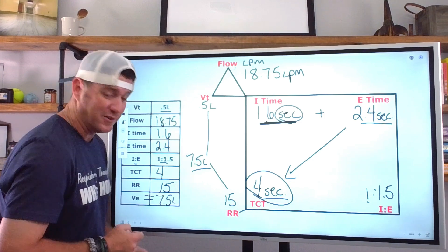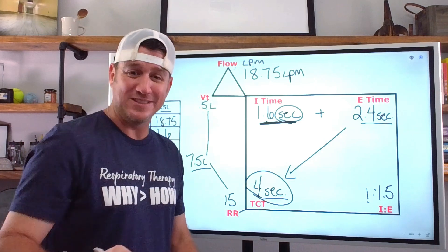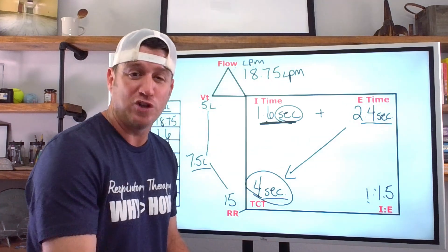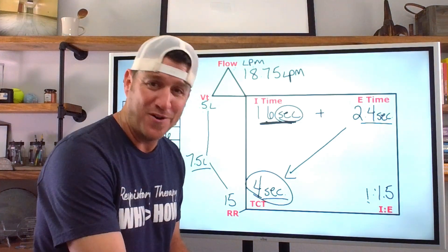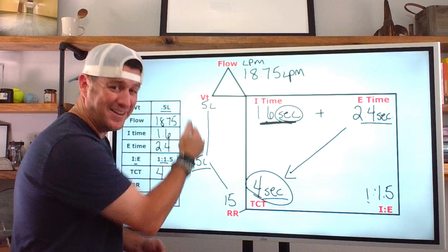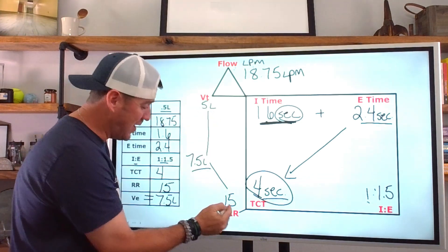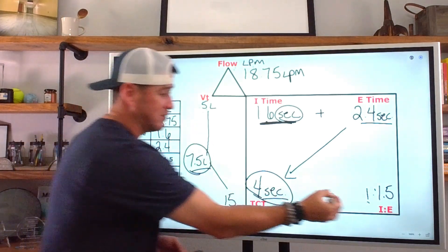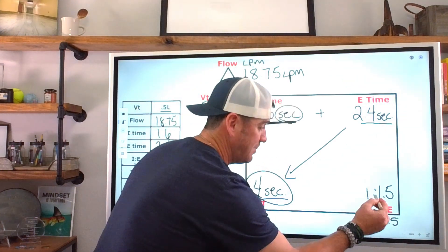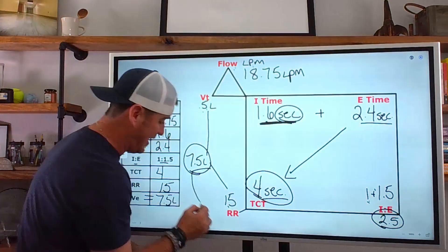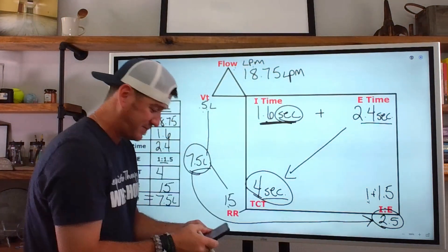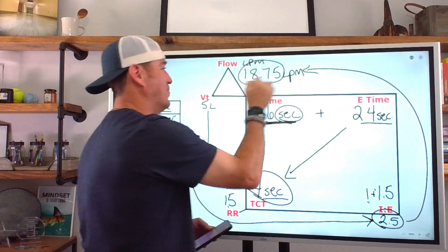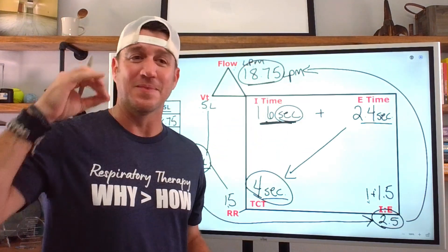Here's the craziest thing — if you multiply your minute ventilation times your total parts, it will give you your flow. We could have started right there. When we knew our rate was 15, minute ventilation equals 7.5. And our total parts is 2.5 — one plus 1.5 is 2.5. So 7.5 times 2.5 equals 18.75. All of this checks out, and I love it — I think it's so cool.